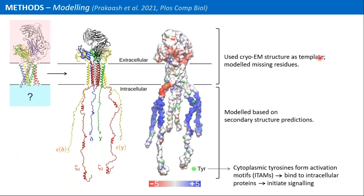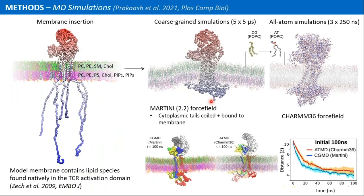In our paper published in PLOS Computational Biology, we took the cryo-EM structure, modeled missing residues in the extracellular region, and importantly modeled the cytoplasmic tails in a linear manner to avoid bias in protein-protein and protein-lipid interactions at the start of simulations. The electrostatic profile shows a dense electropositive patch in the cytoplasmic tails, suggesting strong interactions with negatively charged lipids. We then inserted the complete TCR structure into a complex asymmetric membrane whose lipid composition was derived from a lipidomic study of lipid species found natively in the T cell receptor activation domain.